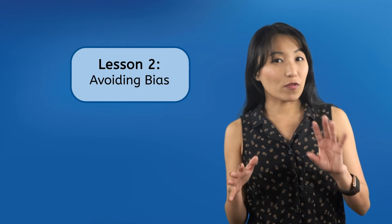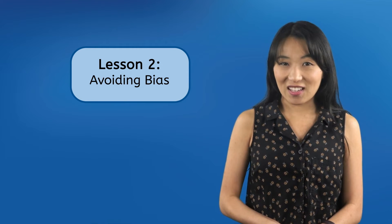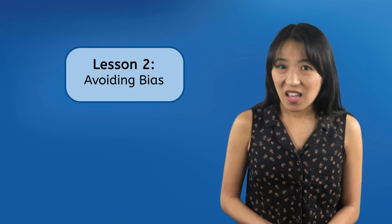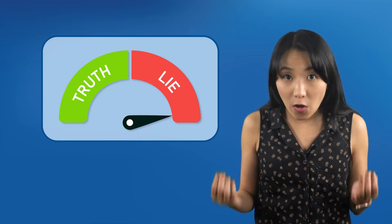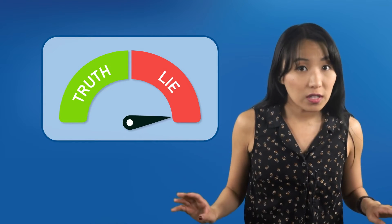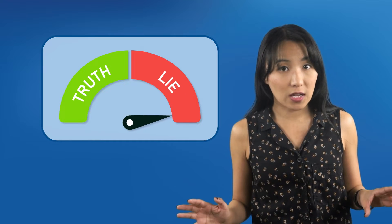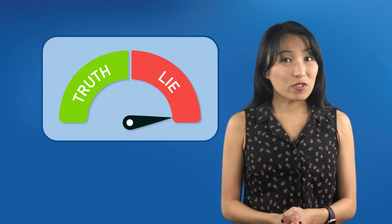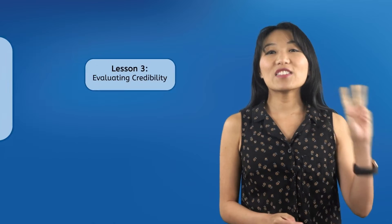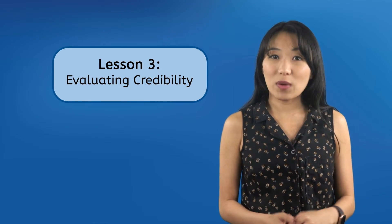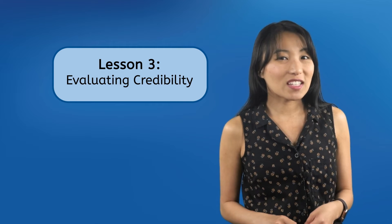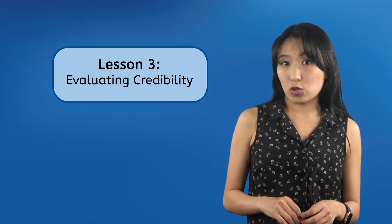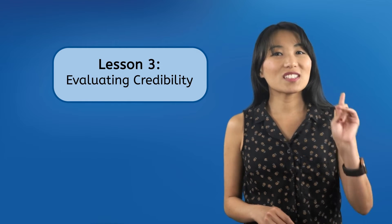What's even worse is that some information on the web isn't just biased — it's downright false. Some people publish totally fabricated lies on the internet, and beginner researchers may not know enough to question them. In the third lesson, I'll teach you how to evaluate the credibility of online sources so you'll have the skills to recognize when somebody might be lying to you and which sources can be trusted to tell the truth.